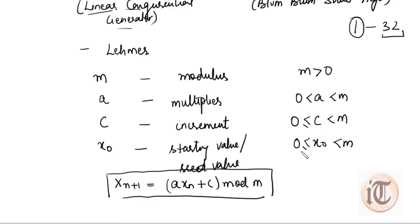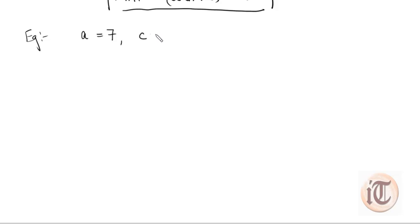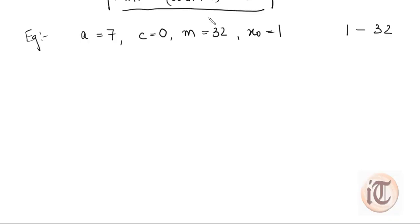Let's take a numerical example to see how this algorithm works. Suppose all four parameters — M, A, C, and X₀ — are integers; this technique will produce a sequence of integers. For example, let A = 7 (the multiplier), C = 0 (the increment), M = 32 (the modulus), and X₀ = 1 (the starting value). This means we want to calculate random numbers in the range 1 to 32 using the LCG algorithm.